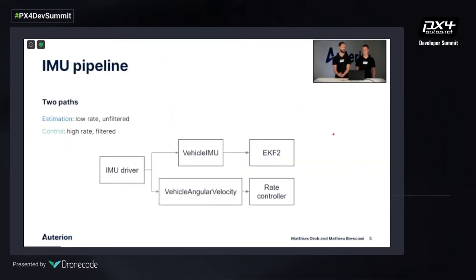The first part I'd like to talk about is the IMU pipeline. I want to emphasize that there are two different paths. There is the top one, which goes to estimation — a low-rate and unfiltered path that goes directly to EKF2 after coming from the IMU driver. And there is the bottom one, which is a high-rate and filtered signal that goes to the rate controller.